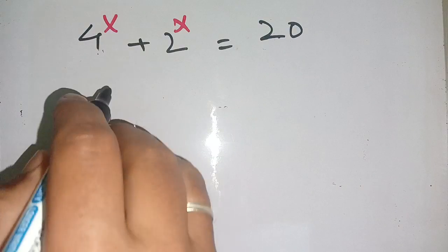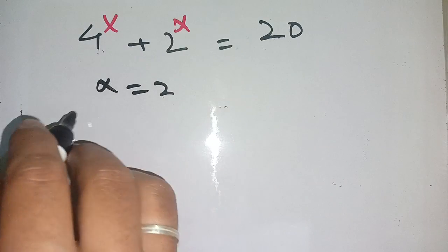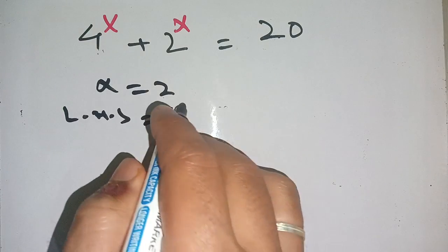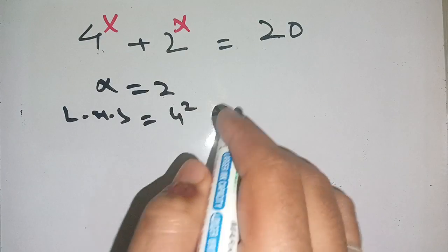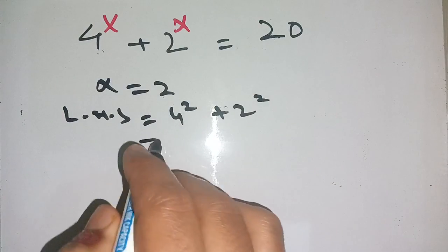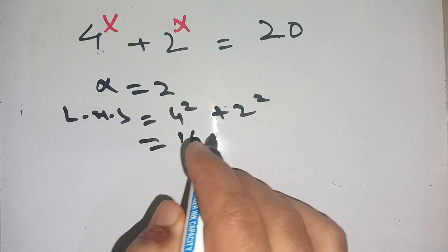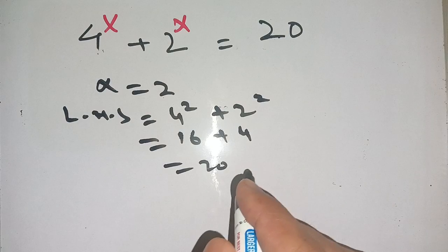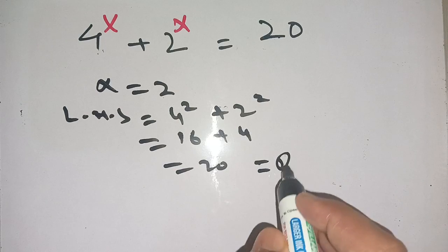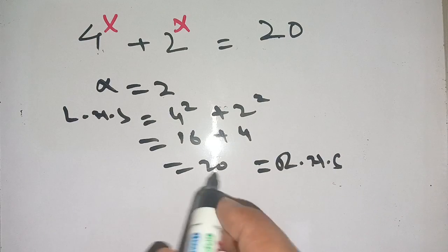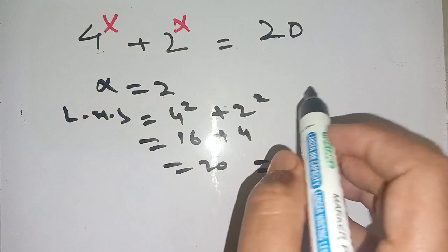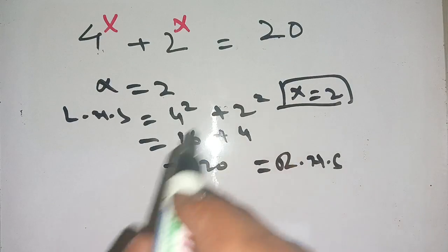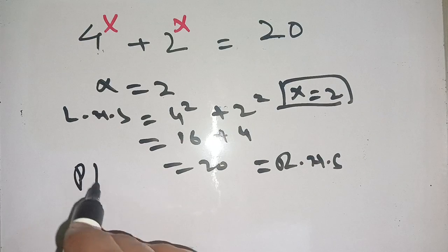We verify by substituting x = 2. The left-hand side is 4² + 2² = 16 + 4 = 20, which equals the right-hand side. Thus x = 2 is the solution of this equation.